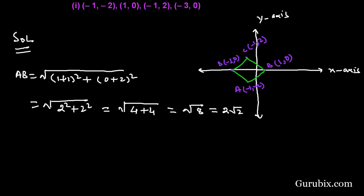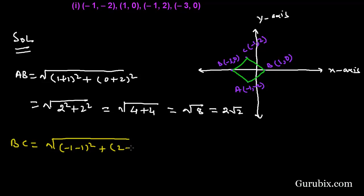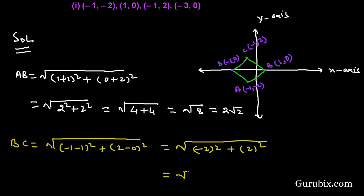Now we find the distance BC: x2 is minus 1 and x1 is 1. It equals √((-1-1)² + (2-0)²) = √((-2)² + 2²) = √(4 + 4) = √8 = 2√2.